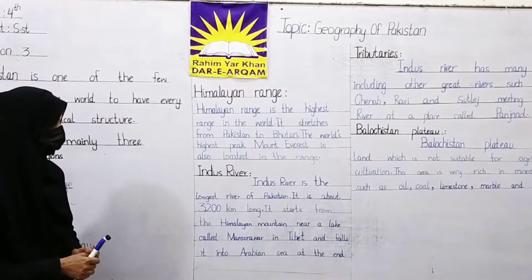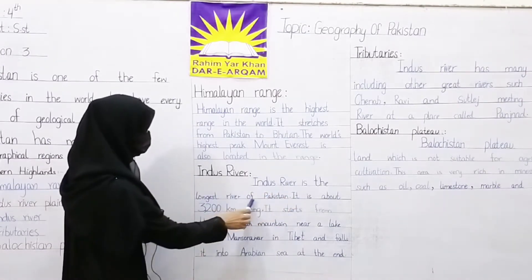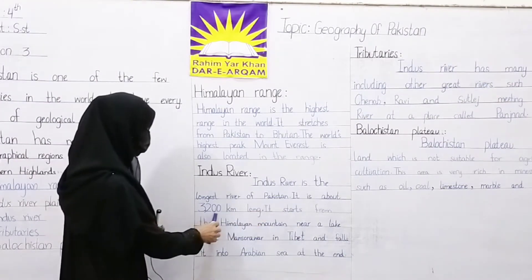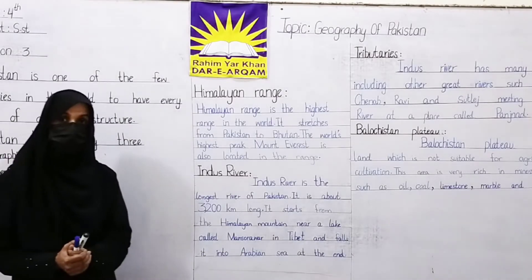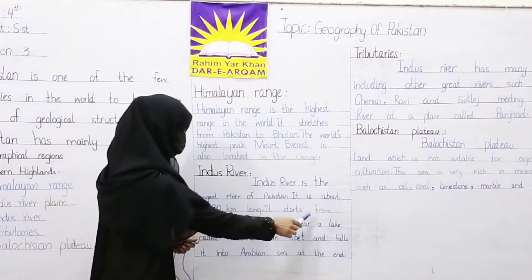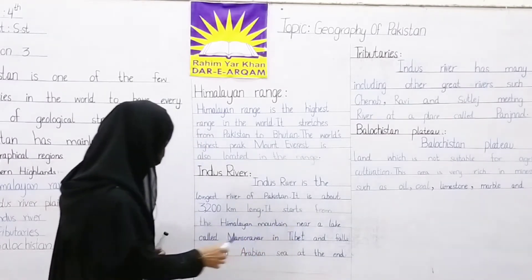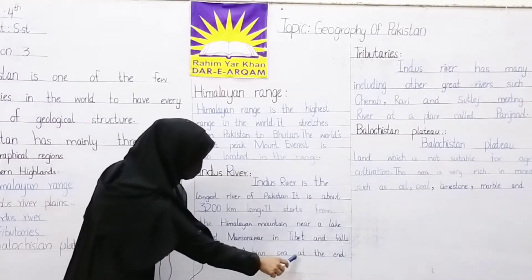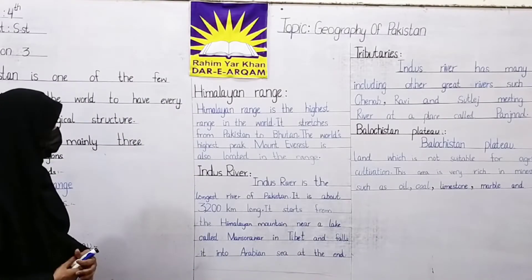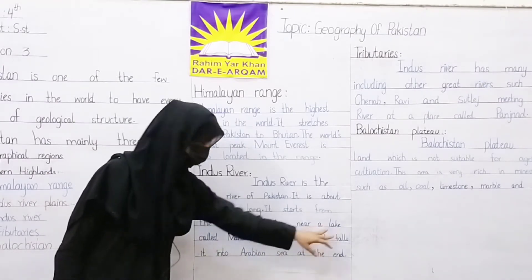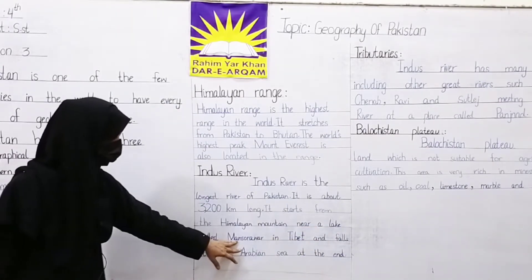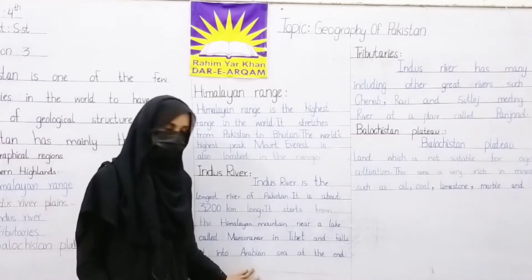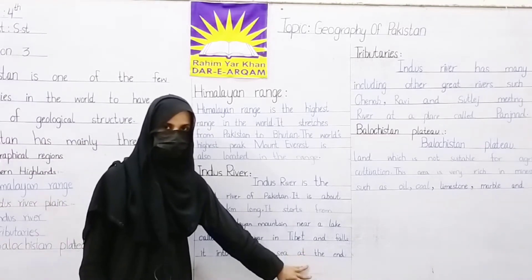Indus River is the longest river of Pakistan. It is about 3,200 km long. The Indus River flows and falls into the Arabian Sea.